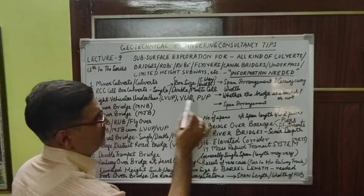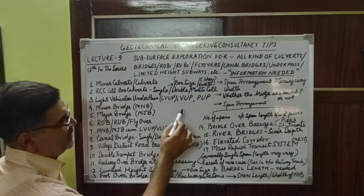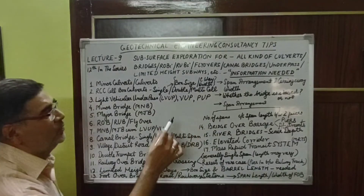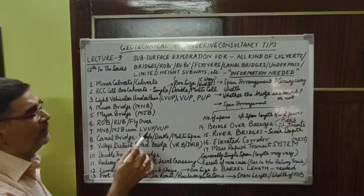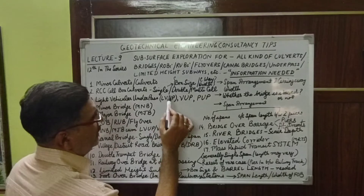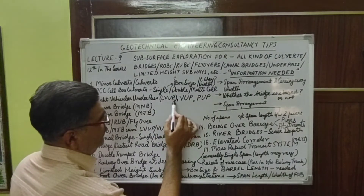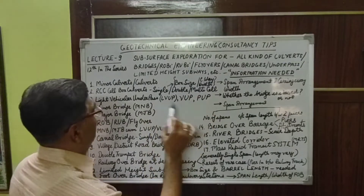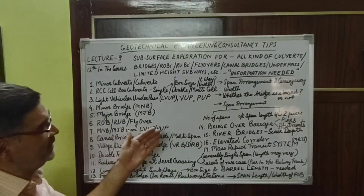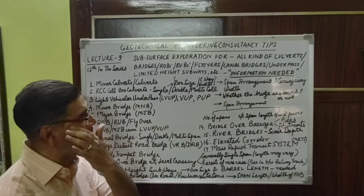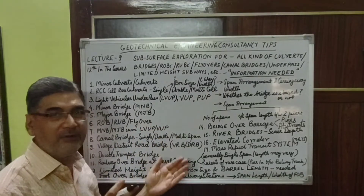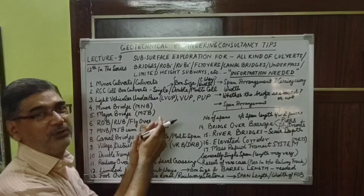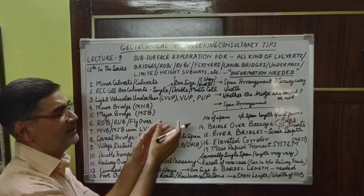For light vehicular underpasses, vehicular underpasses, and pedestrian underpasses — serial numbers 2 and 3 — the most important information we need is the box size and the carriageway width, in order to decide the proposed draft foundation size to be provided at that particular site based on the geotechnical investigation data and test results.